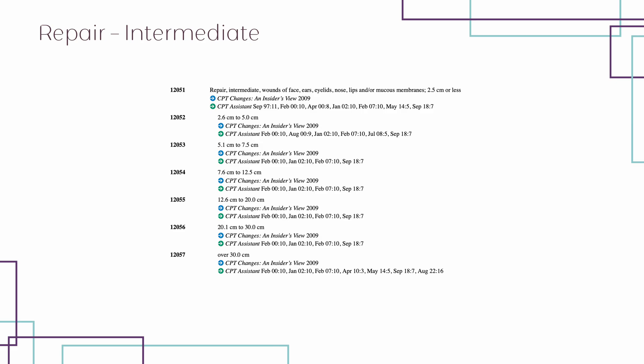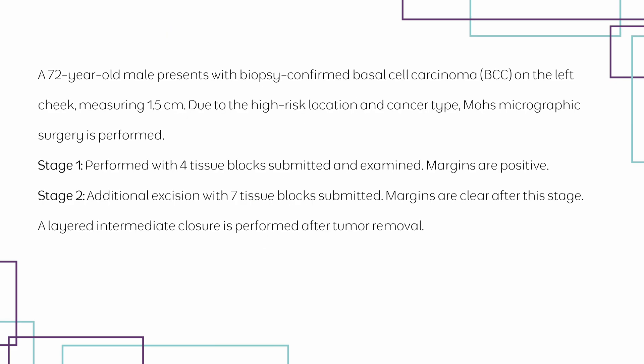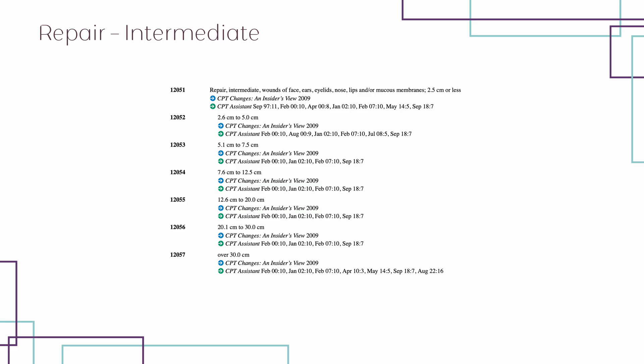Within this family, each code is based on the size of the repair. Reviewing the scenario, we only have documentation of the size of the lesion — nothing about the size of the repair. Therefore, we cannot assume the repair is any larger than the lesion, which measured one and a half centimeters. The code for a one and a half centimeter intermediate repair on the face is 12051.